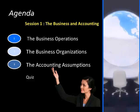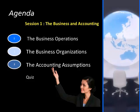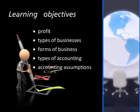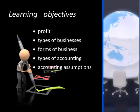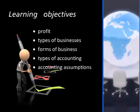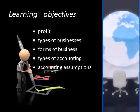I've divided my presentation into three parts: business operations, business organizations, and accounting assumptions. Today you'll learn how to describe profit, risk-taking, and entrepreneurs; how to describe service, merchandising, and manufacturing businesses; how to compare sole proprietorship, partnership, and corporate forms of business; how to describe the purpose of accounting; how to explain financial and management accounting; and how to describe three basic accounting assumptions.